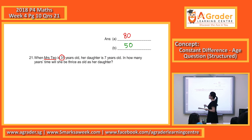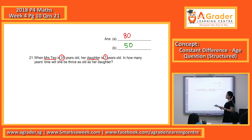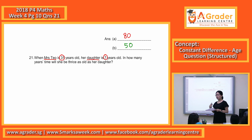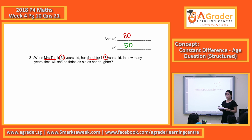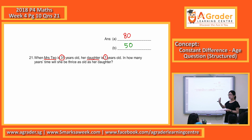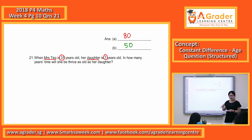Mrs. Teo is 31 years old and the daughter is 7 years old. They give you directly the age of the two of them. When they did not mention whether the present age is this, or in how many years time, we usually say the question is for present age. So now Mrs. Teo is 31 years old and the daughter is 7 years old.